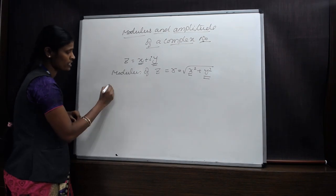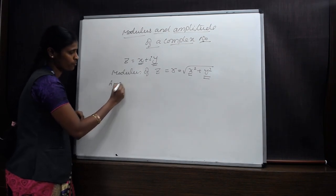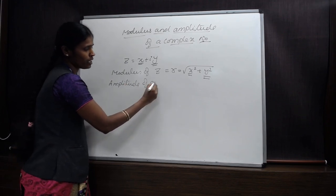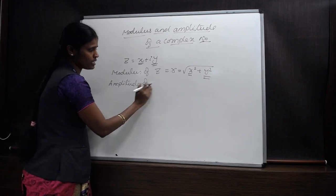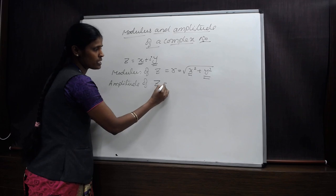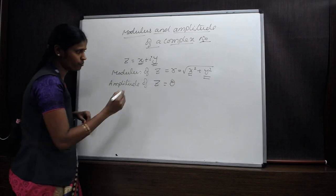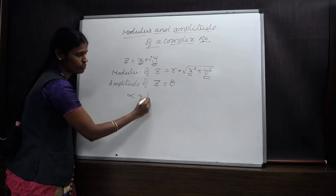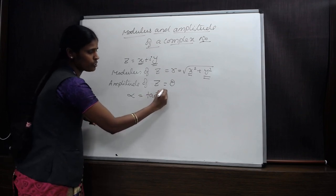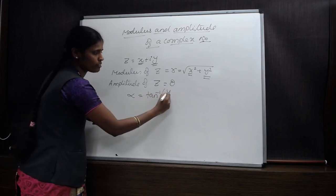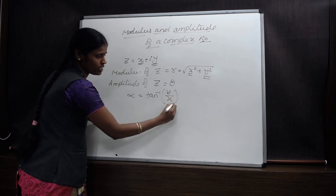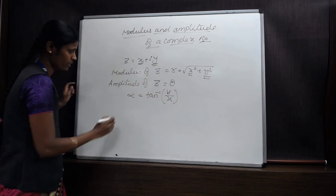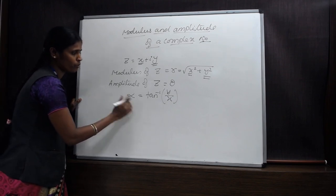Now we discuss the amplitude of a complex number z. Amplitude of z is represented by θ. We have the formula: α = tan⁻¹(y/x), where y is the imaginary part and x is the real part of the complex number.